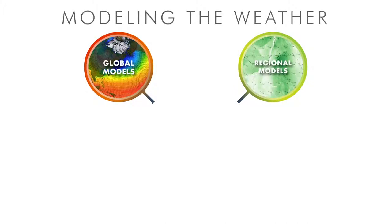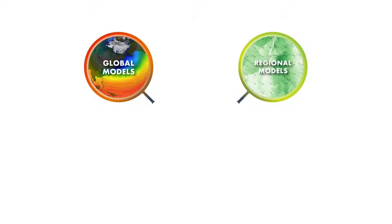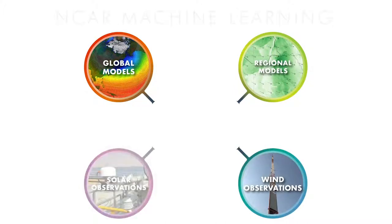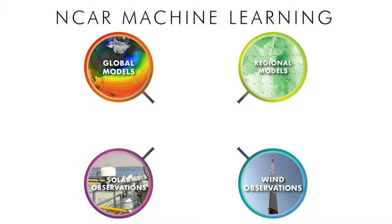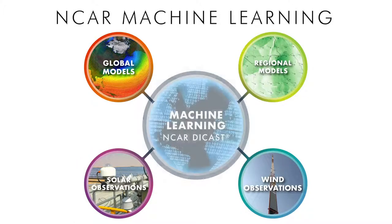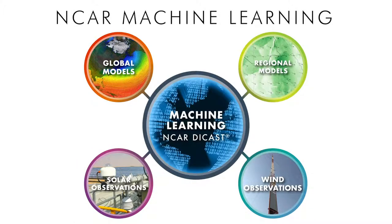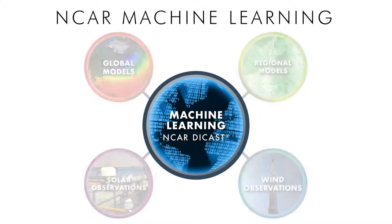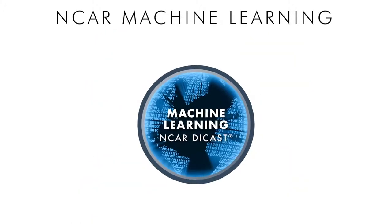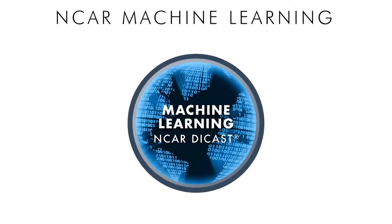Along with the predictions from global and regional weather models, we take wind and solar observations from Shagaya and feed all of that into a machine learning algorithm developed by NCAR, which produces a tuned consensus prediction of wind speed, solar irradiance, and, most importantly, power.